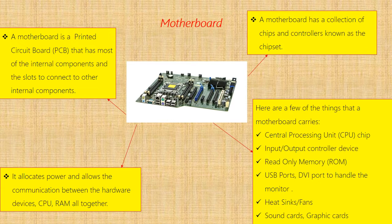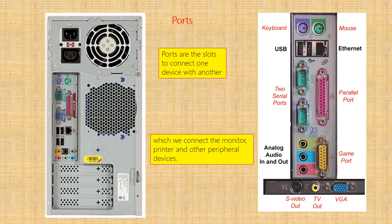Some of the things available on the motherboard are: the CPU chip, input/output controller device, ROM (read-only memory), USB port, DVA port to handle the monitor, heat sinks or fans (used to avoid excessive heat in the computer system), sound card, and graphics cards.